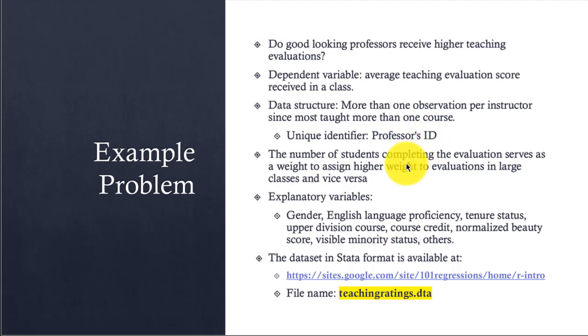At the same time, not all classes are the same. Some classes have several hundred students, others have a few dozen or fewer students. If there are a few hundred students responding to teaching evaluation, that course should have a higher weightage in the dataset than a course with just five or six students responding. We will weight the observations by the number of students who participated in the teaching evaluation survey.